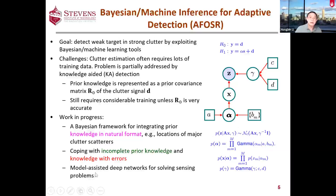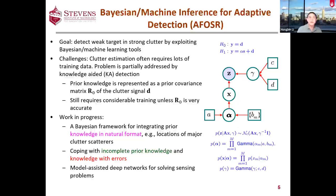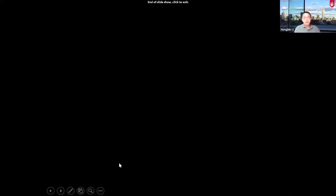We're also extending this work with current students working on model-assisted approaches — using this kind of model along with data-driven approaches like deep networks for solving such sensing problems. Those are some snapshots of what we are doing, focused primarily on how we use signal processing, statistics, and machine learning tools to solve sensing and communication problems. I appreciate this opportunity, and I welcome any kind of collaborations within Stevens and outside Stevens.